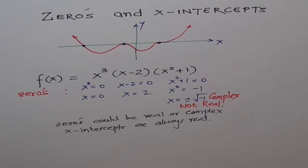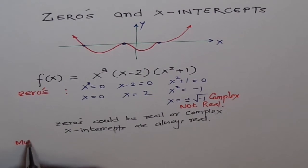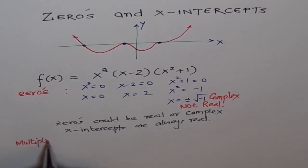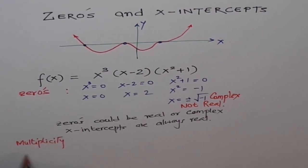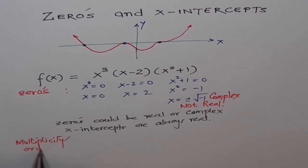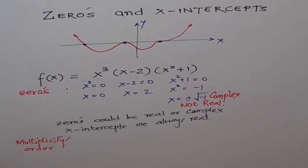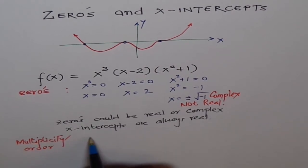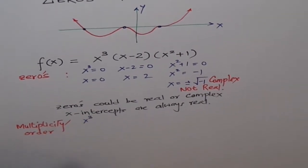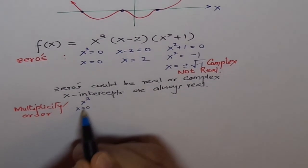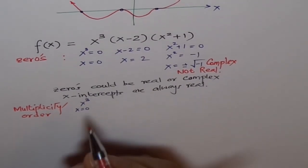Second. Now, let's try to sketch this graph. Now, let's look into multiplicity of the zeros or order. Now, at X equals zero for X³ we have X equals zero. What is the multiplicity here? Three.